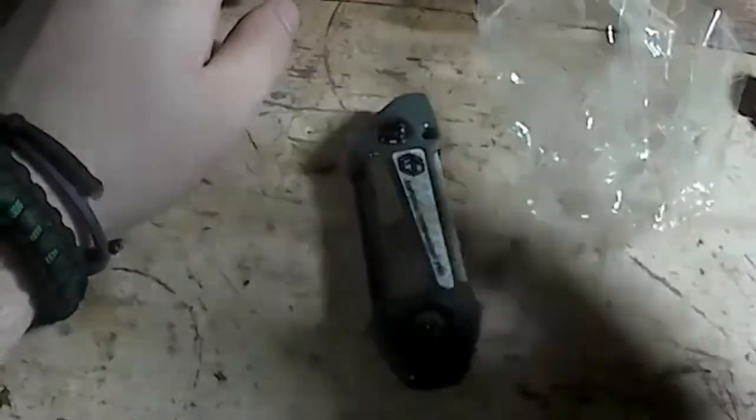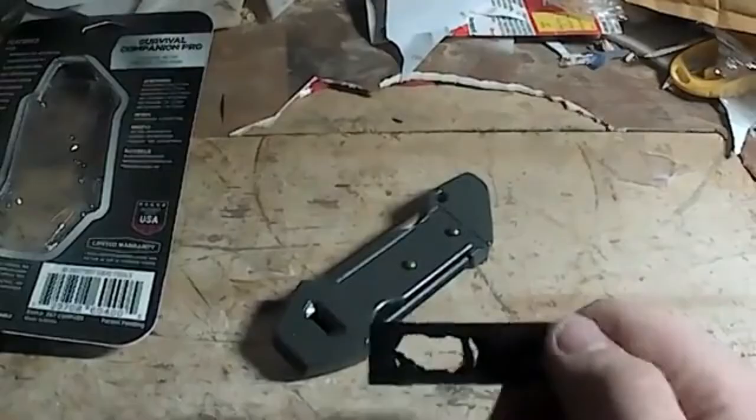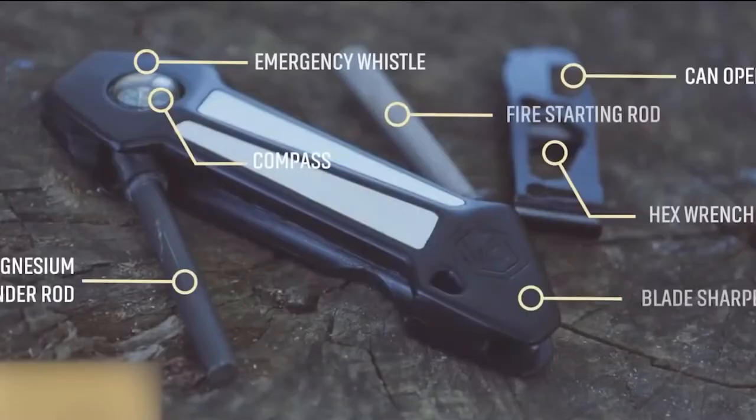It also has a stainless steel belt clip, a ruler, ferocerium fire starter and magnesium tinder rods, bottle and can openers, serrated blade, a flathead screwdriver, and a graduated wrench with four common hex sizes.